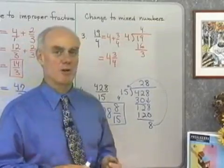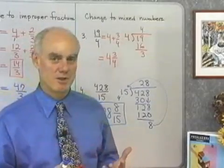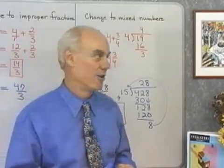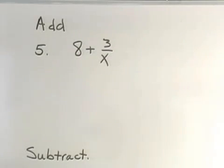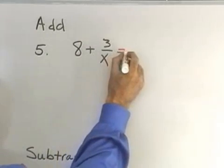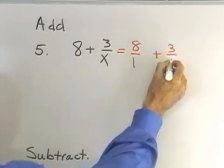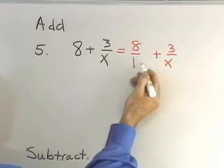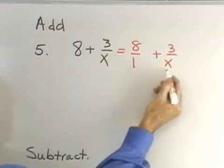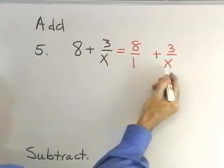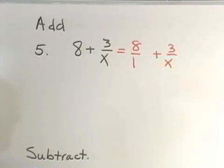Now, for the pre-algebra students, I want to look at a couple of problems that are similar to what we just did with these mixed numbers, but they involve variables. Let's add 8 and 3 over x. 8 plus 3 over x. Okay, this is going to be 8 over 1 plus 3 over x. I look for a least common denominator, the simplest expression I can find that's divisible by 1 and by x. That will be x.